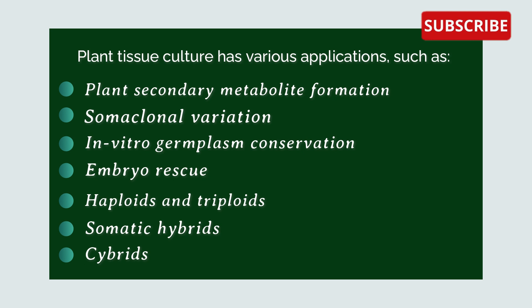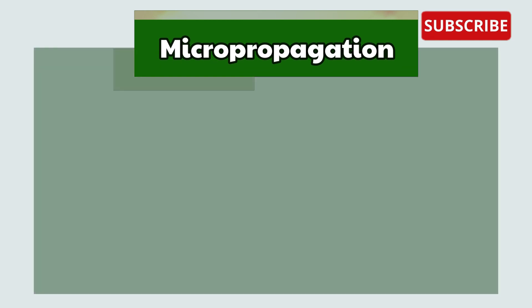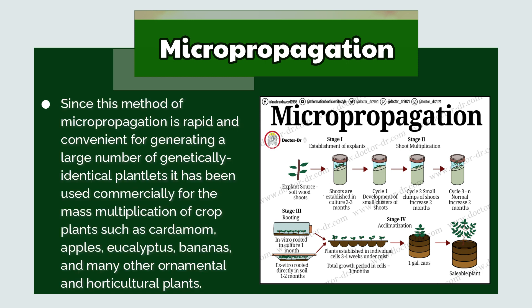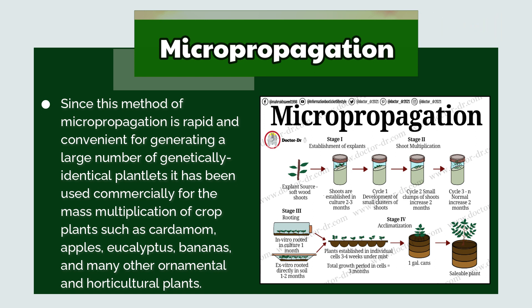Let's begin with the understanding of micropropagation. The plant parts usually used for this type of propagation are apical meristem, auxiliary buds, or seedlings obtained by in vitro germination of seeds. Since this method is rapid and convenient for generating large numbers of genetically identical plantlets, it has been used commercially for mass multiplication of crop plants such as cardamom, apples, eucalyptus, bananas, and many other ornamental or horticultural plants.